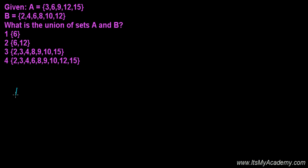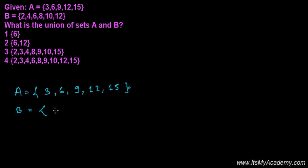So we are given set A, which is {3, 6, 9, 12, 15}, and similarly we have another set B, which is {2, 4, 6, 8, 10, 12}. Now we need to write the union of set A and B.